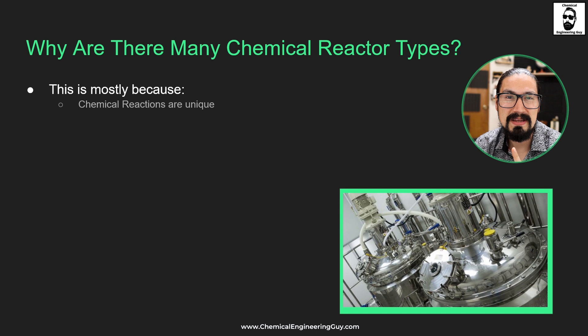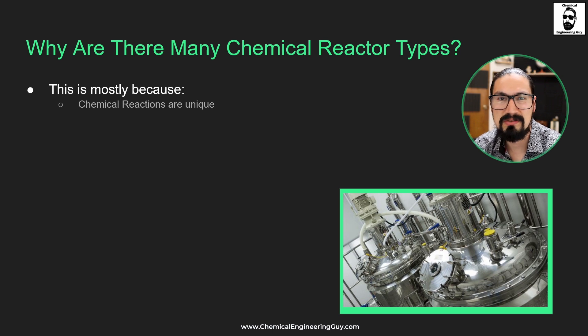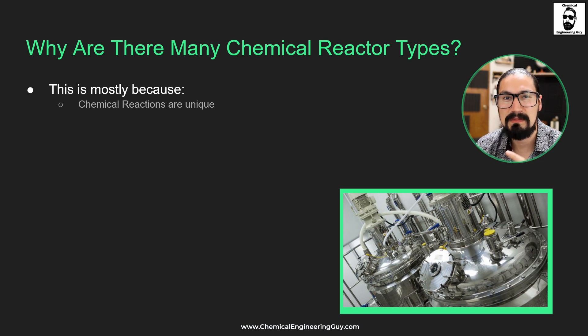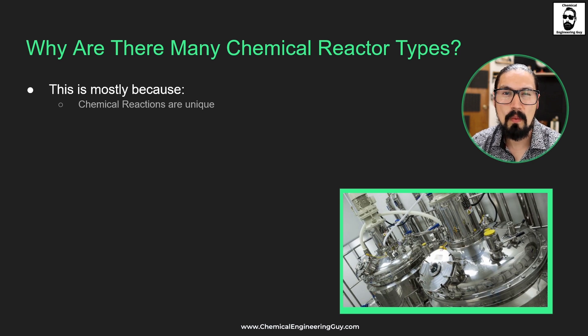Let's get more technical. Reactions may be exothermic, endothermic, they may be in equilibrium, they may form subsequent reactions, they may form different phases — maybe they started in liquid and ended up in gas. There are many factors that explain why we have so many types of chemical reactors, because every chemical reaction is unique in its nature.